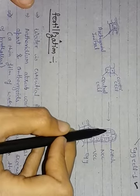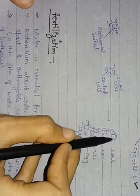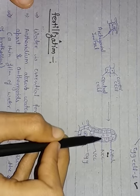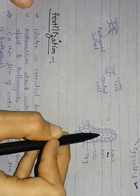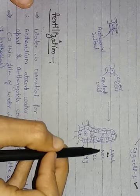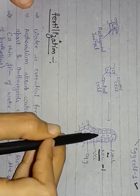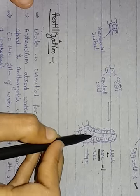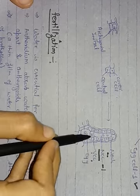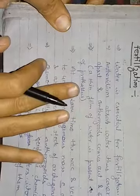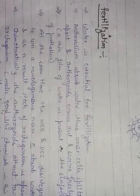You can see this structure: the cover cells are all around the neck. These are all neck cells. The center region has the elongated neck canal cell, next to which is the ventral canal cell, and below that is the egg. Now we have to talk about fertilization. The three parts of the archegonium have developed and the event of fertilization follows.